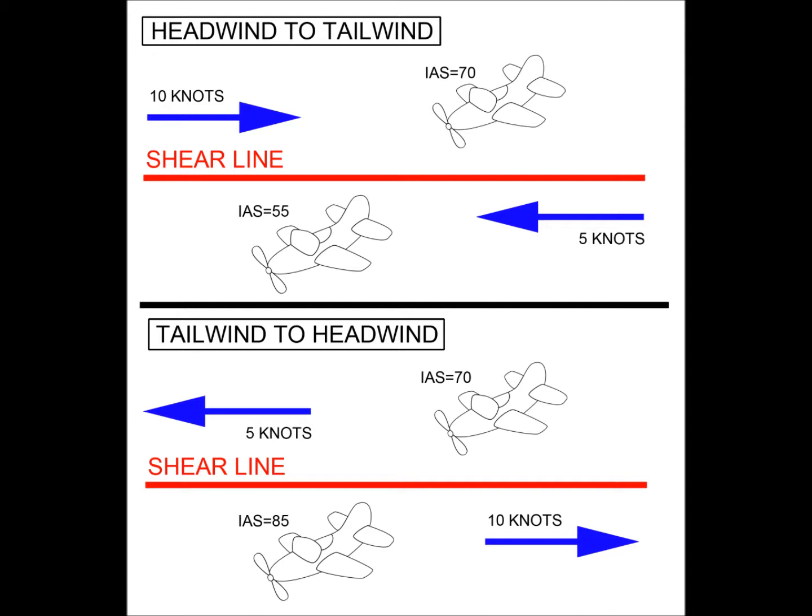Conversely, a wind that shifts from the tail to the nose, or a tailwind that suddenly decreases, results in a rise in indicated airspeed followed by an increase in lift and performance. In today's cockpit video, you'll see examples of both.